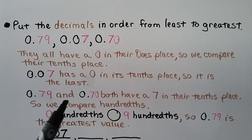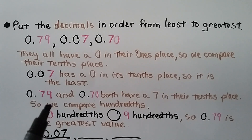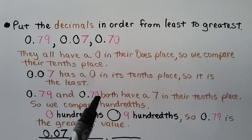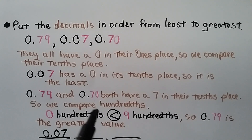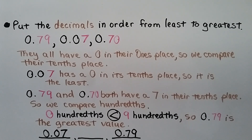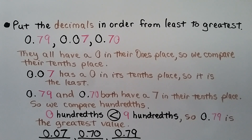Seven hundredths has a zero in the tenths place, so it's the least and we write it first. Seventy-nine hundredths and seventy hundredths both have a seven in the tenths place, so we compare hundredths: seventy-nine hundredths has nine hundredths and seventy hundredths has zero hundredths — zero is less than nine — so seventy-nine hundredths is the greatest. The order from least to greatest is: seven hundredths, seventy hundredths, seventy-nine hundredths.